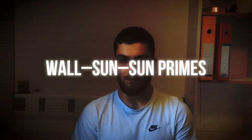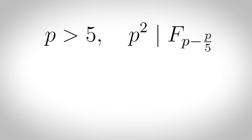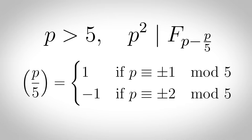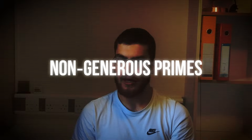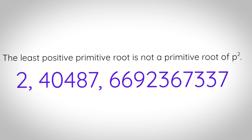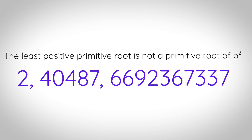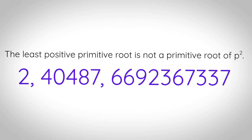Wall-Sun-Sun primes: a prime p greater than 5 where p squared divides the Fibonacci number F sub (p minus p over 5), where the Legendre symbol p over 5 is defined accordingly. As of 2018 no Wall-Sun-Sun primes are known. Non-generous primes: primes p for which the least positive primitive root is not a primitive root of p squared. Only three of these primes are currently known.